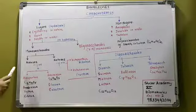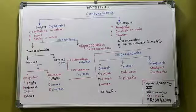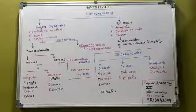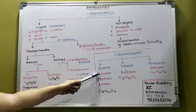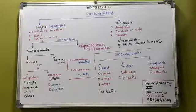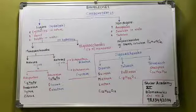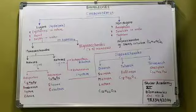This was regarding monosaccharides. Now, oligosaccharides are classified as disaccharides, trisaccharides, and tetrasaccharides. Disaccharides give 2 monosaccharide units on hydrolysis. Trisaccharides give 3 monosaccharide units on hydrolysis. Tetrasaccharides give 4 monosaccharide units on hydrolysis.